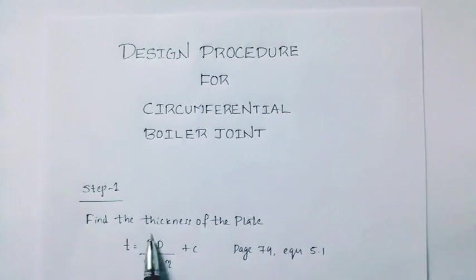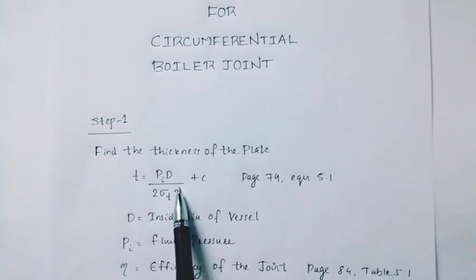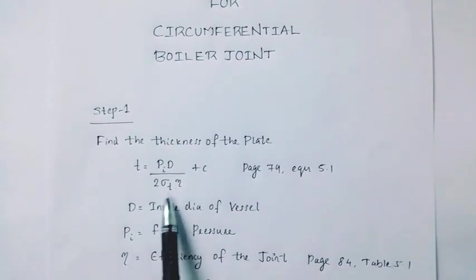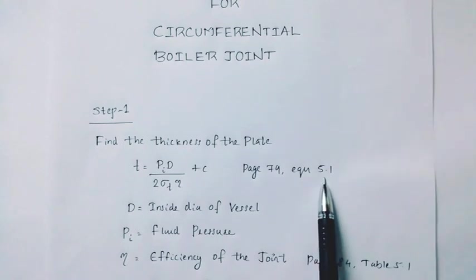Step 1. Find the thickness of the plate. t equals pi into d divided by 2 sigma t into eta plus c. Page number 79, equation 5.1. This is capital D.